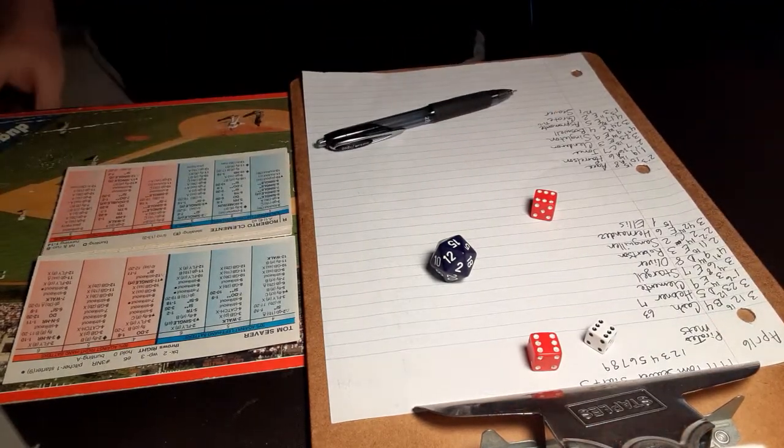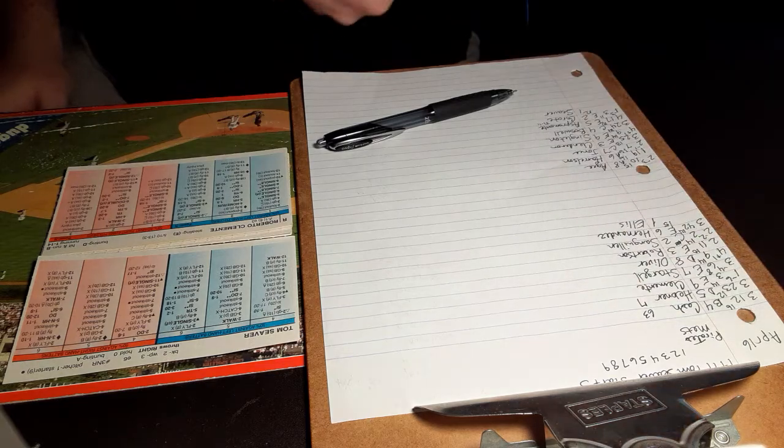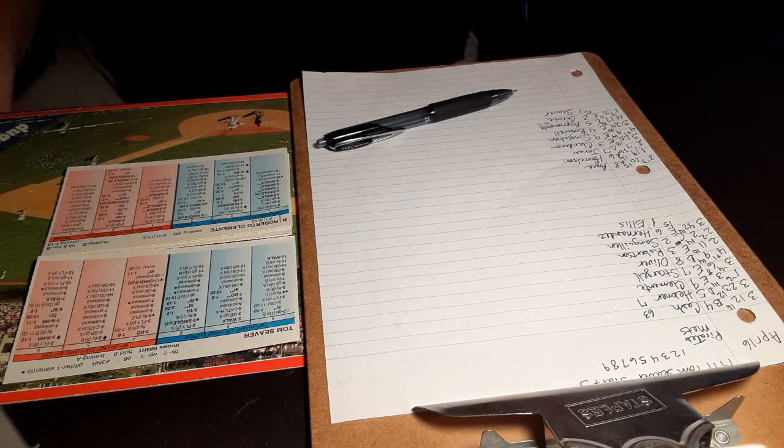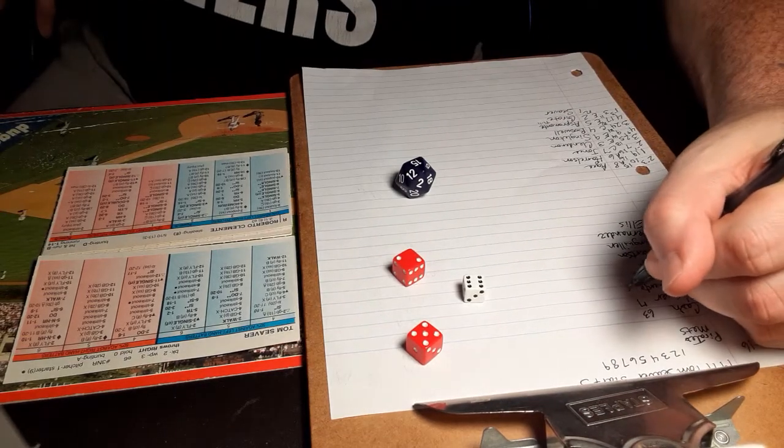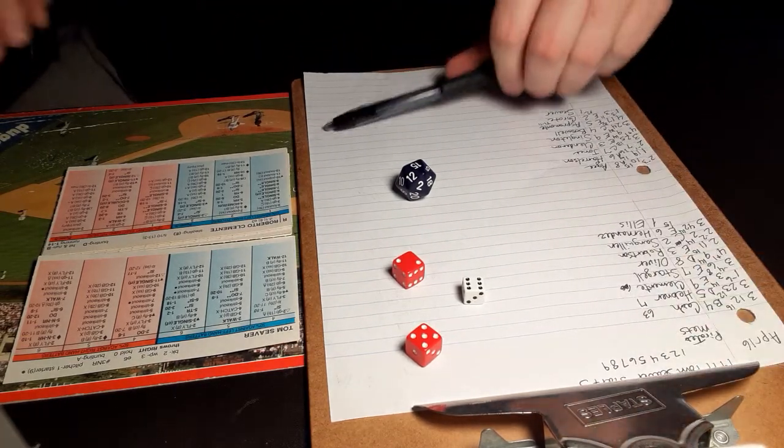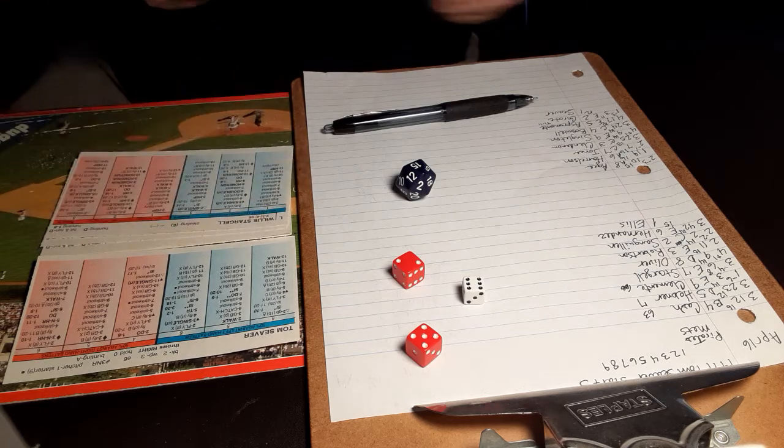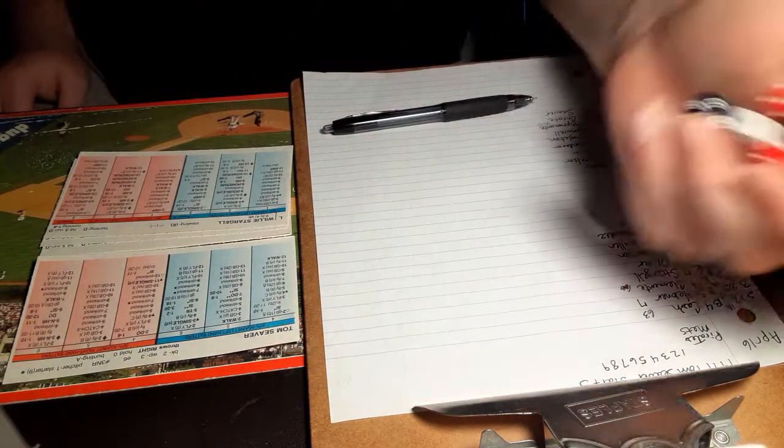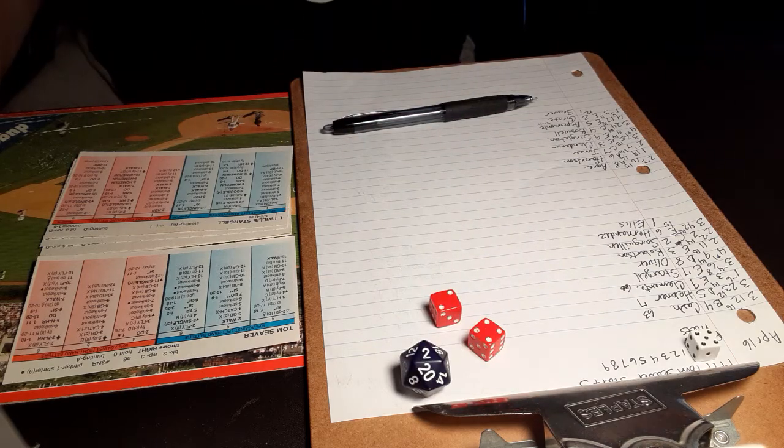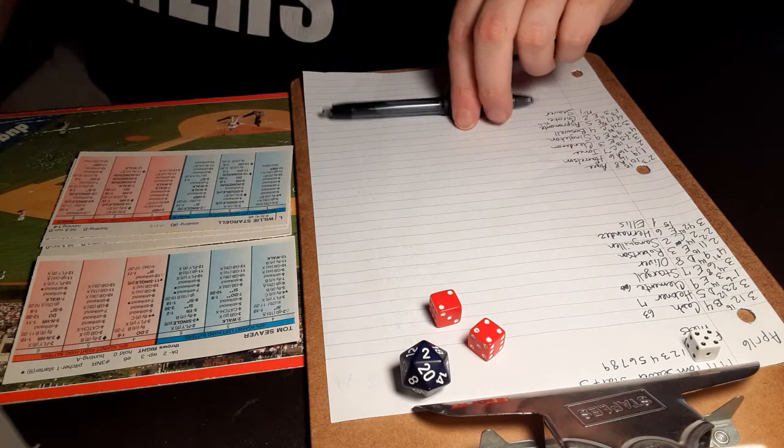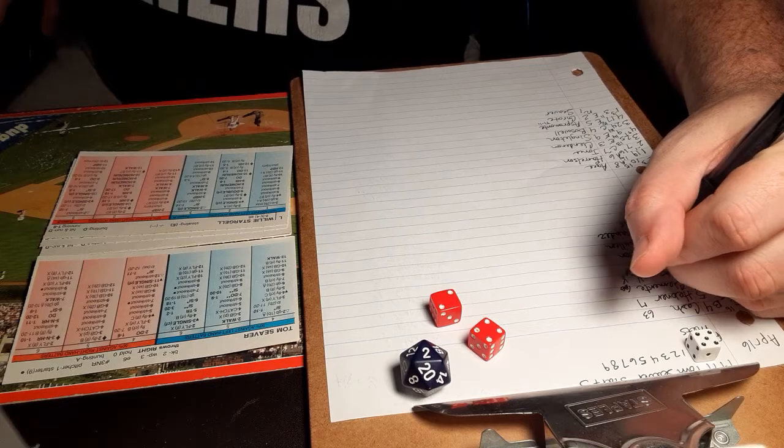Two down, and here is Roberto Clemente playing right field. And 6-7, he draws a walk, so two out walk to Clemente, he will not be held on. And here is Pops, Willie Stargell, playing left field. And 5-6, swing and a miss, strike three, and that'll retire the side.